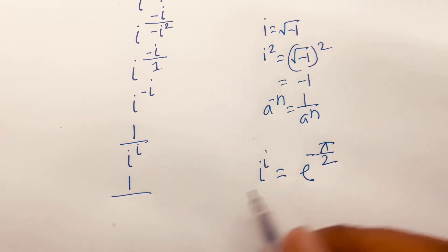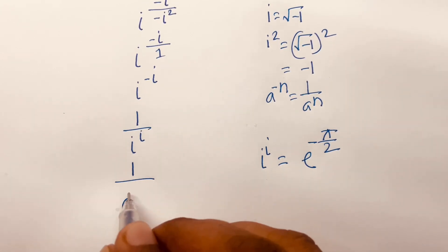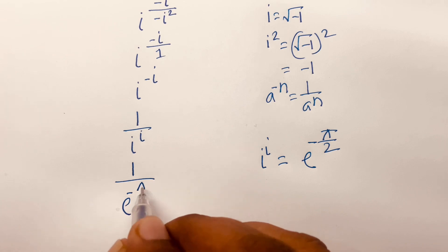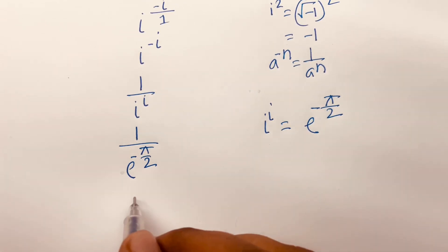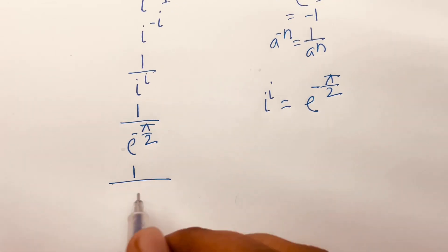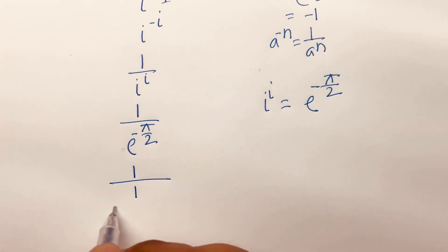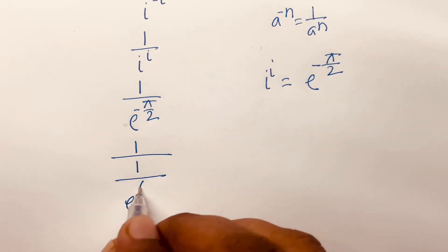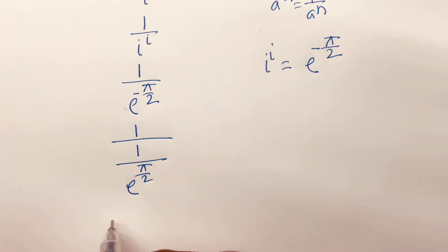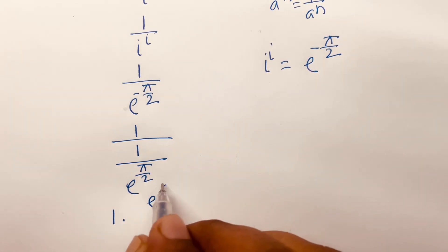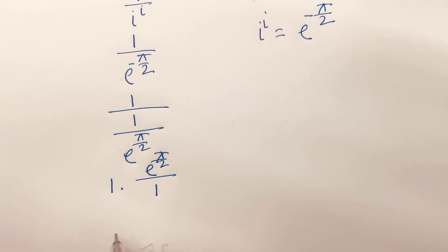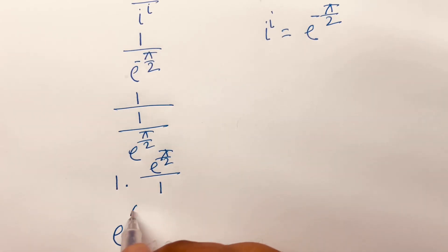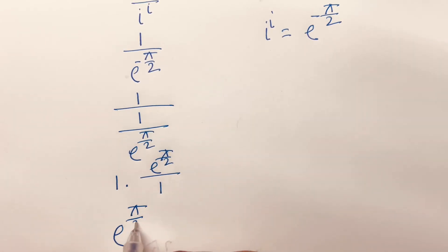Then I can say here is e to the power minus pi by 2. Then it will be 1 over — 1 over e to the power minus pi by 2. Then I can say 1 times e to the power minus pi by 2 over 1. It will be e to the power minus pi by 2. It is a real number.